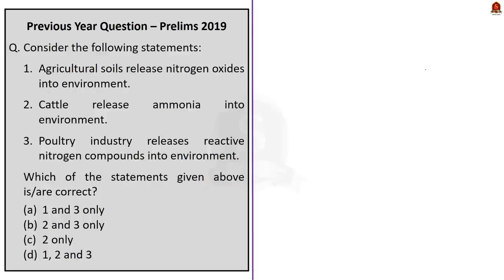So, with this basic understanding, let us take up the question now. First statement, agricultural soils release nitrogen oxides into environment. Yes, it is correct because agricultural soils are sometimes treated with manure, which is created by animal waste. And just now we saw that nitrous oxide is emitted during storage and treatment of animal waste.